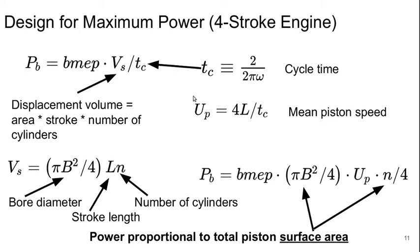And if we make a couple of substitutions there in terms of substituting in TC for this, we end up with an expression here for the power, which says that it's the mean effective pressure times, basically something that's proportional to the bore squared times the mean piston speed times the number of cylinders. So this B²N is something that's essentially proportional to the total piston surface area. So the power turns out to be proportional to the total piston surface area.